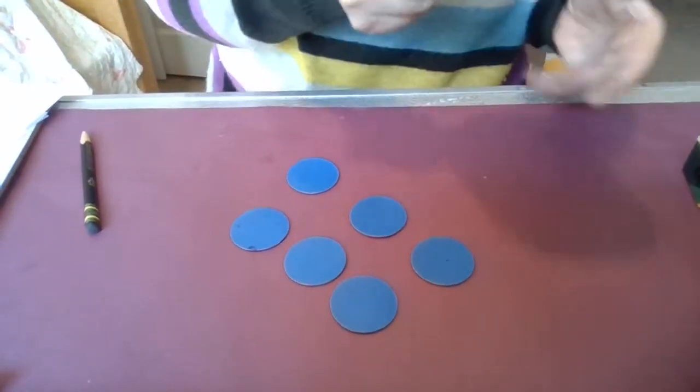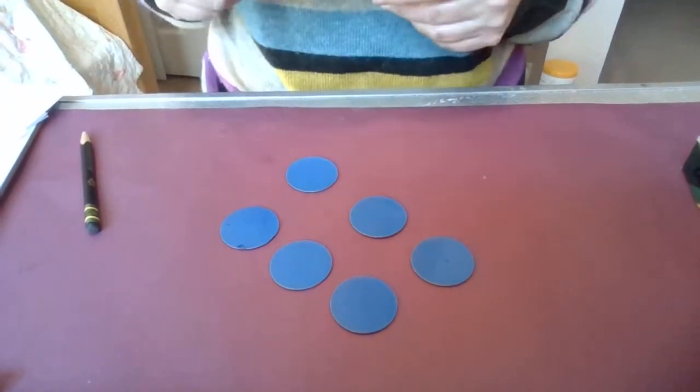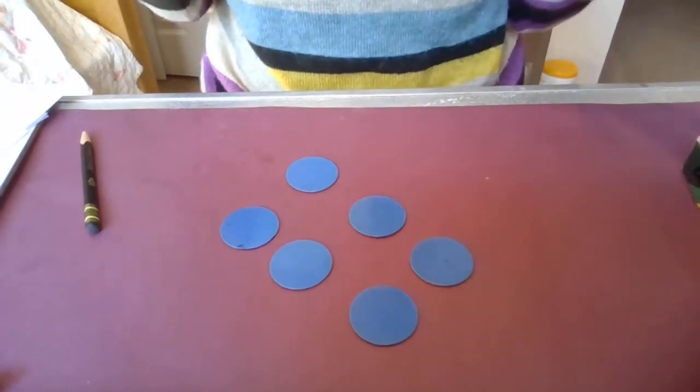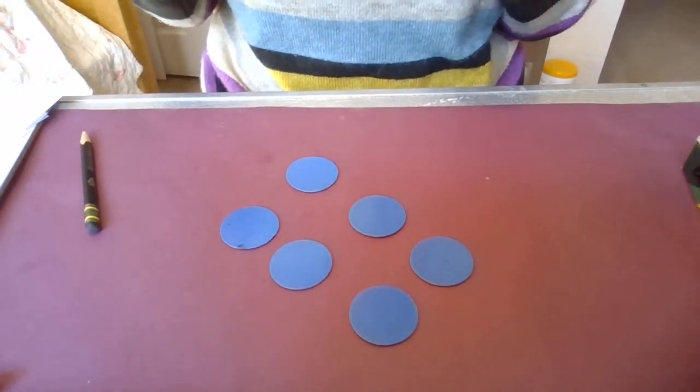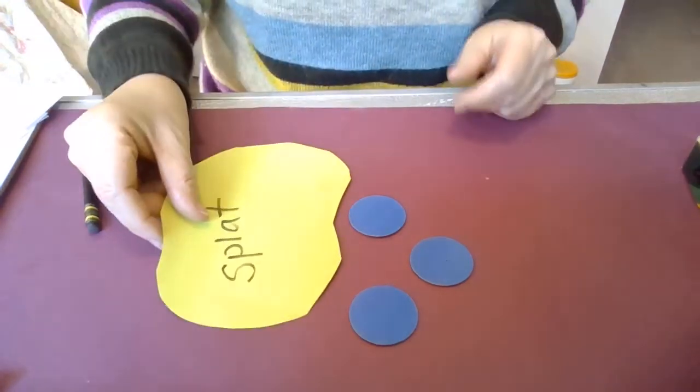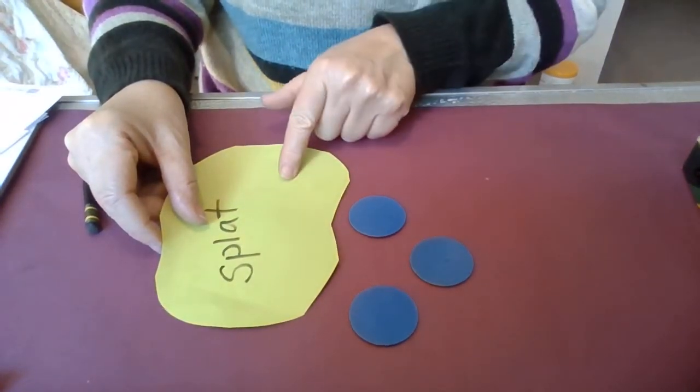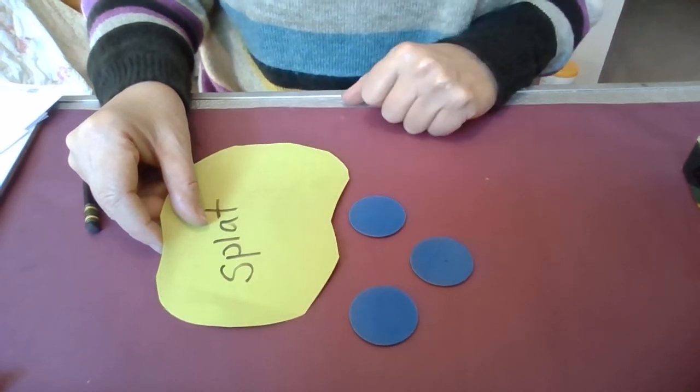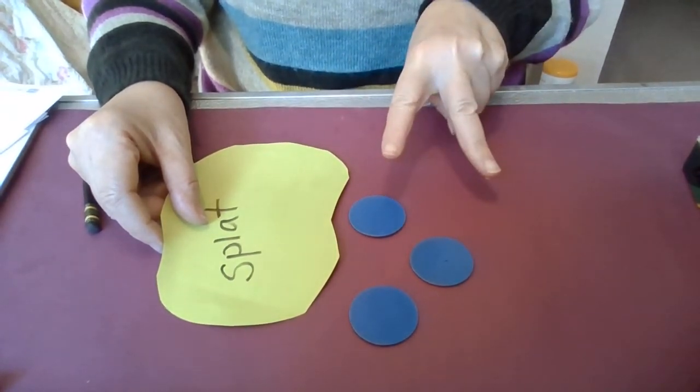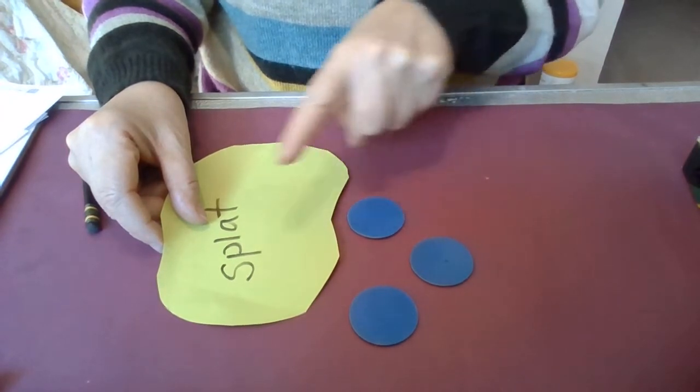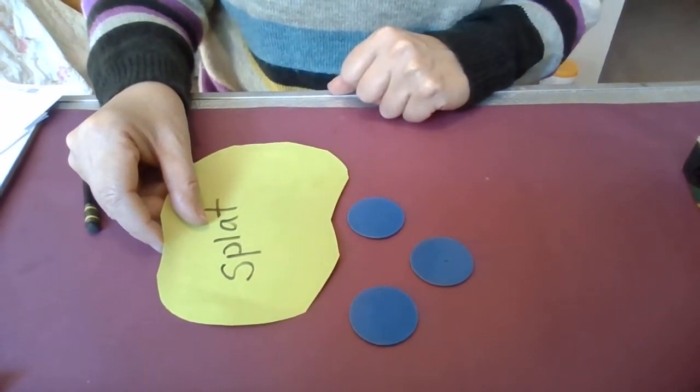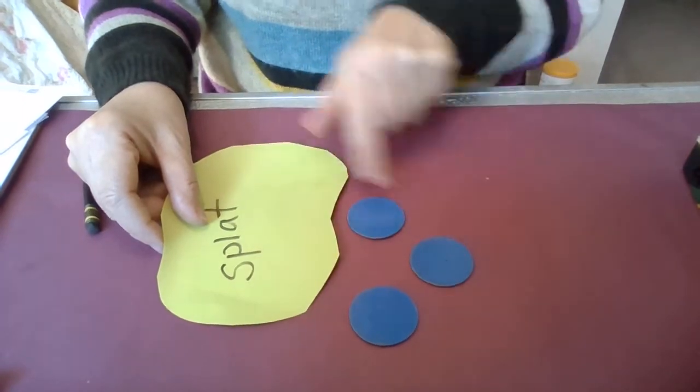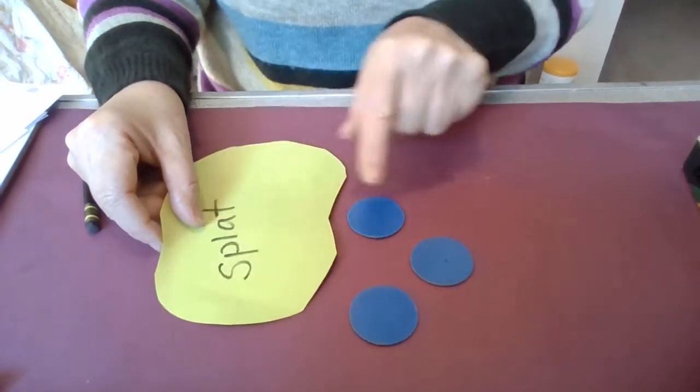Here are six and you know I like this game splat. If you know six really well, how well do you know six? We'll test it. If I splat, how many are under there? Do you know? It's three. If you know that then you know two things. You know three plus three makes six and you know six take away three leaves three.